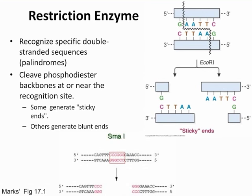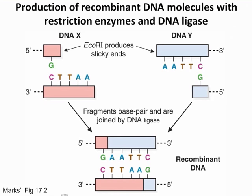This is the step where you make your chimeric plasmid — having your plasmid DNA and your foreign DNA together, otherwise called recombinant DNA. This is accomplished by DNA ligase, which joins them together. ECO-R1 generates sticky ends for both DNA X from the plasmid and DNA Y from the foreign DNA, then DNA ligase joins them to produce the chimeric plasmid, otherwise known as recombinant DNA.